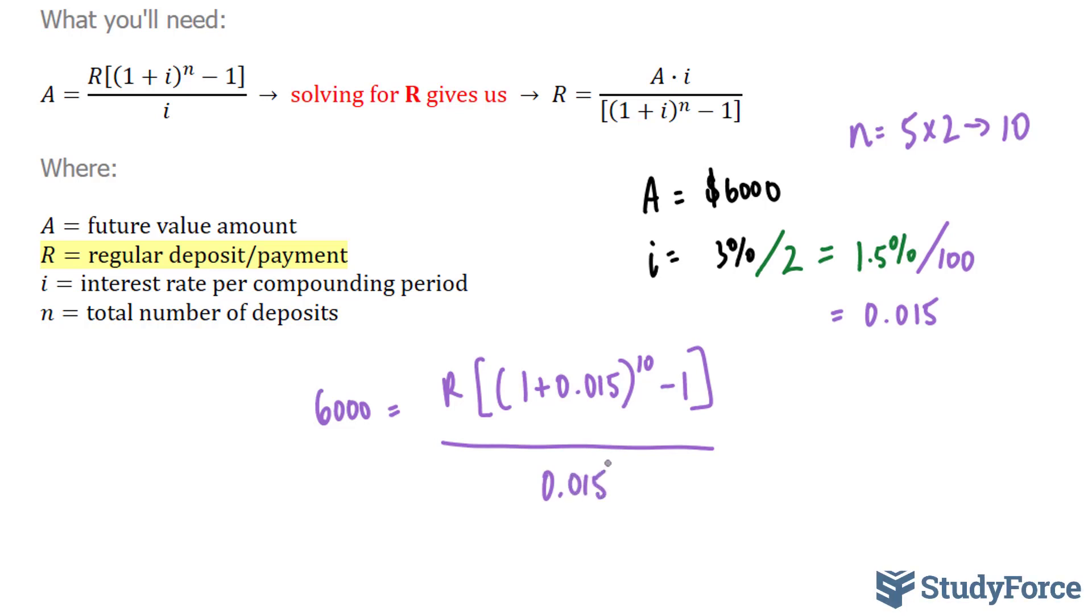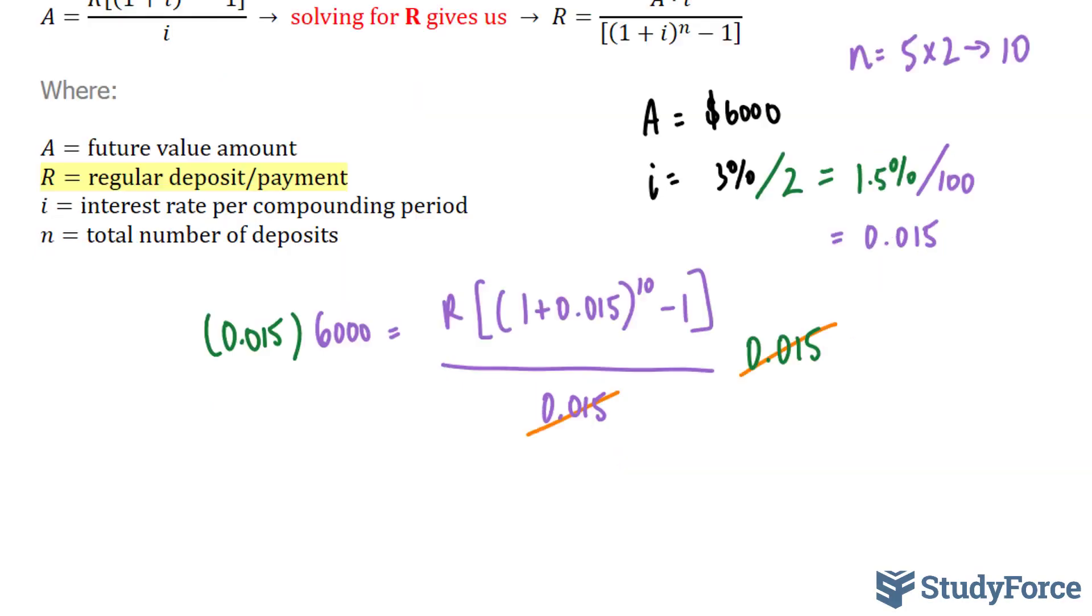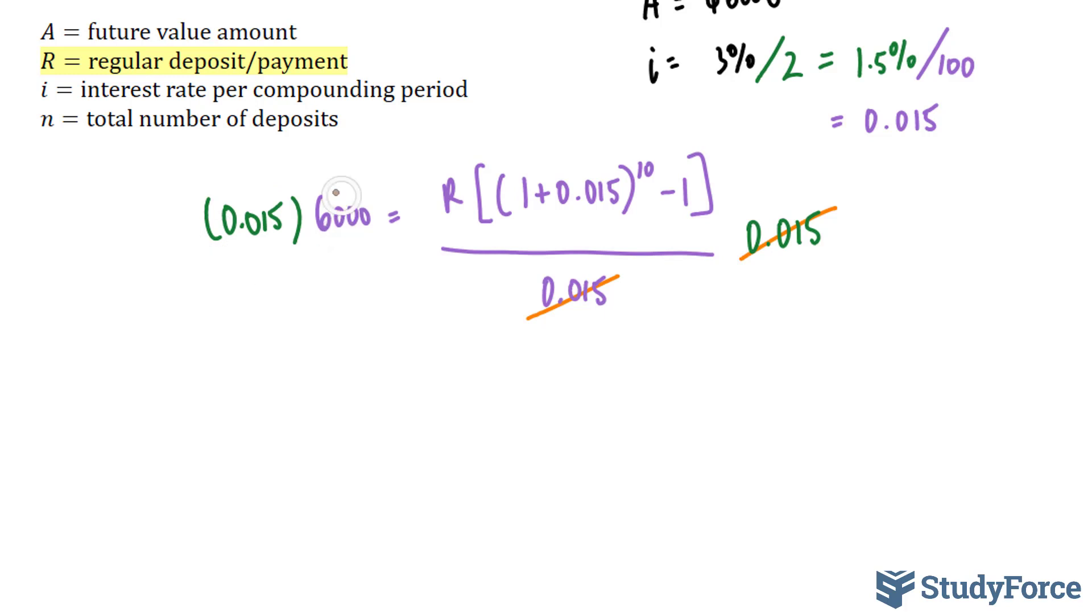Now, to solve for R, we need to start off by getting rid of the denominator. That said, we start by multiplying this side by 0.015 and this side by 0.015. On the right side, this cancels out. And on the left side, we have the following. Of course, you can evaluate it right now, but I'll wait until I solve for R.